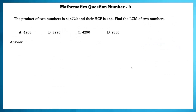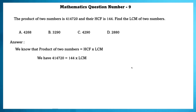Mathematics question number 9. The product of two numbers is 4,14,720 and their HCF is 144. Find the LCM of the two numbers. We know that the product of two numbers = HCF × LCM. So 4,14,720 = 144 × LCM, giving us LCM = 2,880.